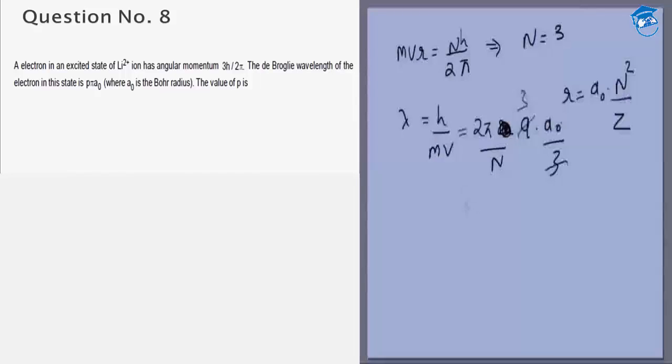We know n is equal to 3 from here. 6 by 3, so this is equal to 2π a₀, which is given to us to be p π a₀. So the answer to this question is p is equal to 2.